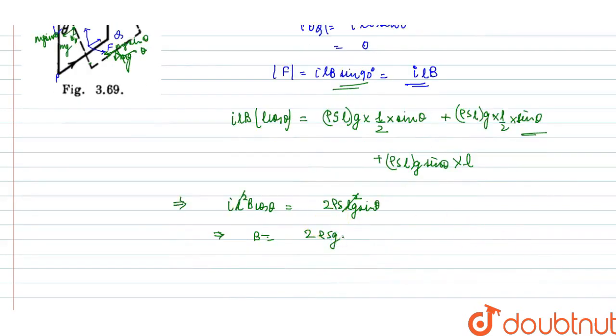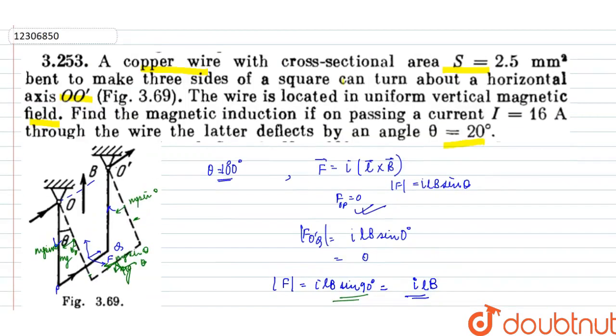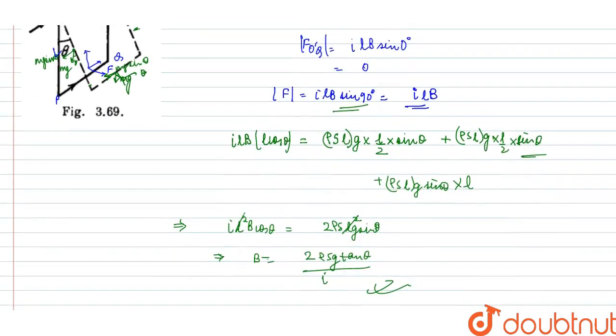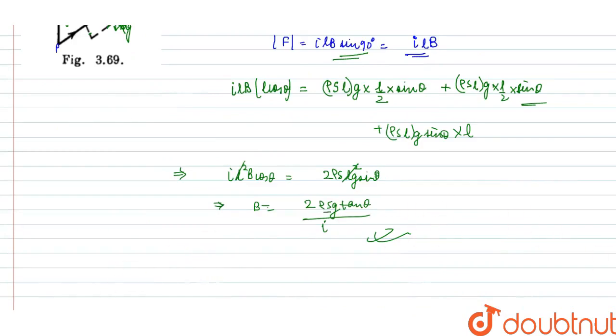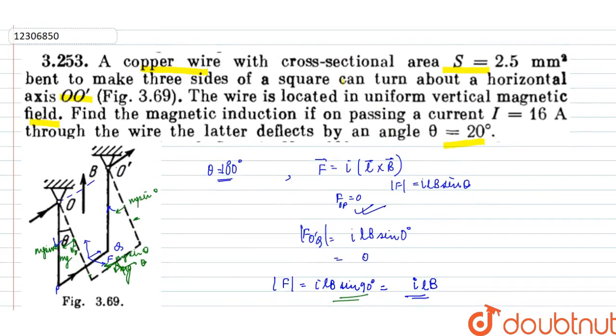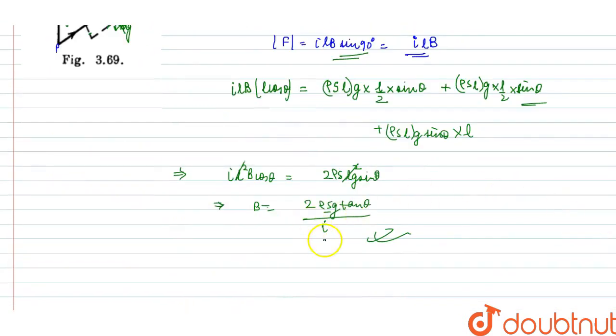This is our magnetic induction. And when we put value, we will put tan theta is 20 degree. 2 times the density is given, you have cross section, and volume is given. So substitute and we will know the magnetic field. So this is our magnetic induction.